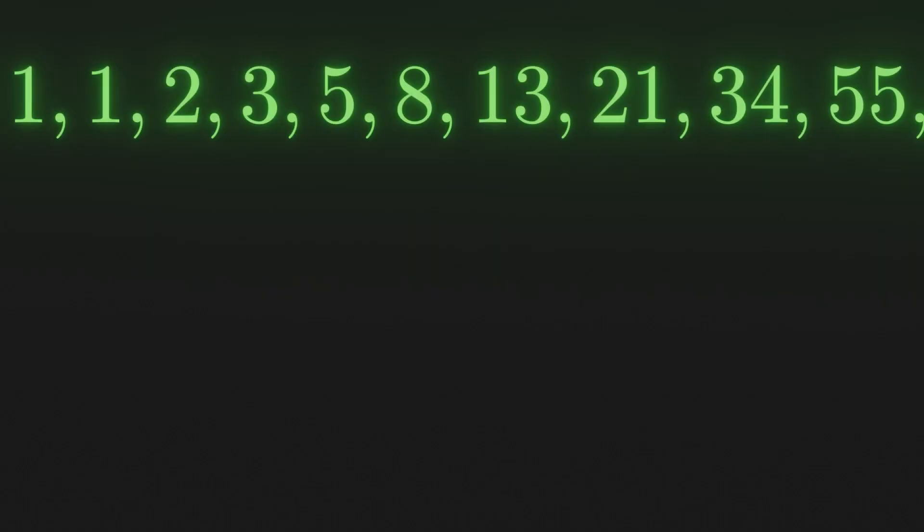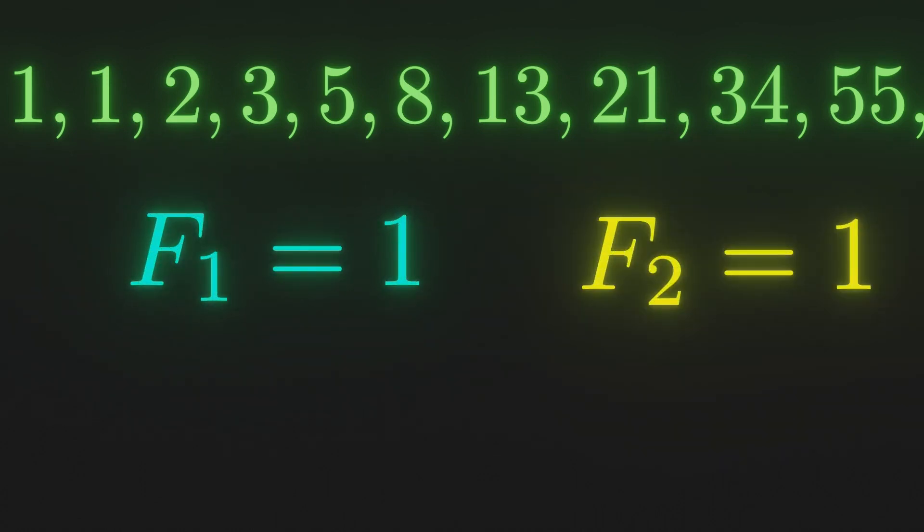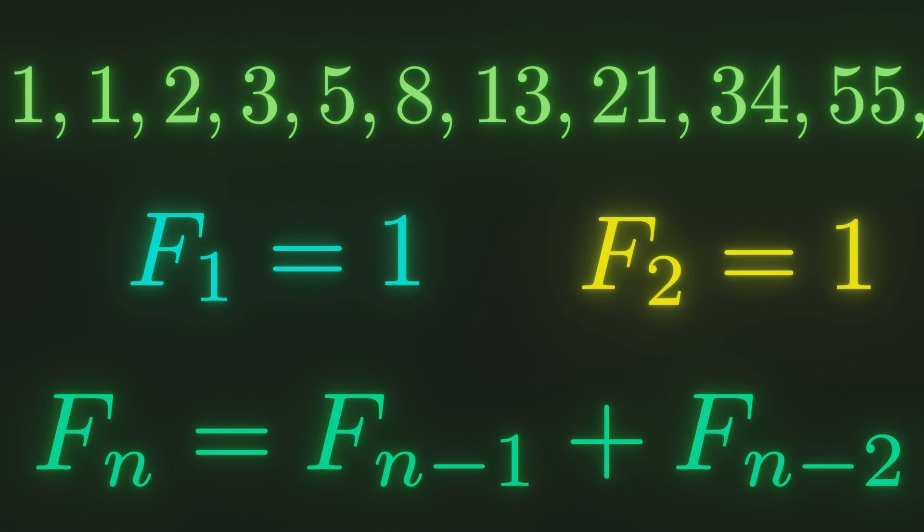Before we get started on the Fibonacci sequence, we need to properly define our sequence. Let's denote the nth Fibonacci number as f sub n, so let's define the first term to be 1, the second term to also be 1, and each term is the sum of the previous two.